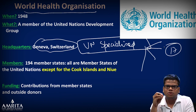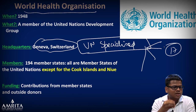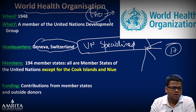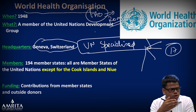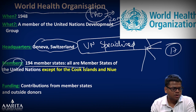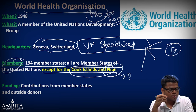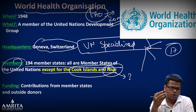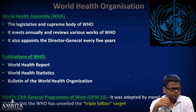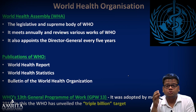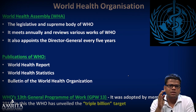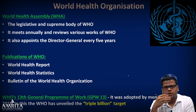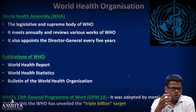There are around 17 UN specialized agencies. To remember their headquarters, remember by default that everyone is in Geneva and learn the exceptions — for example, FAO is in Rome, ICJ is in The Hague. WHO has 194 member states — all UN members except Cook Islands and Niue. Its funding comes from member state contributions and outside donors. Currently, WHO has issued advisories on the coronavirus situation in China.